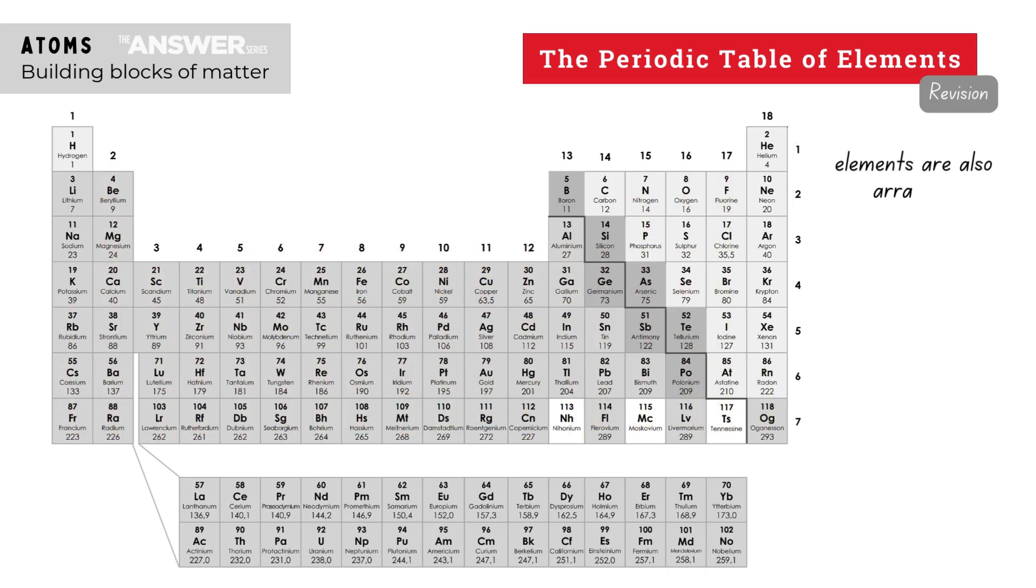The arrangement of the elements in rows and columns can also tell a scientist what properties the element is expected to have because the elements have been arranged and grouped on the periodic table according to similar properties, for example whether they are metals, semi-metals, or non-metals.